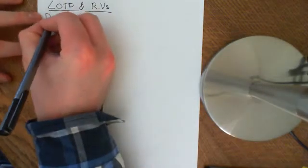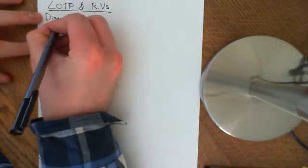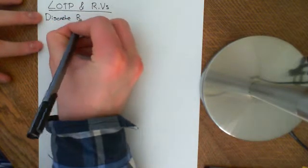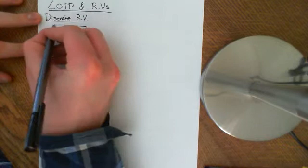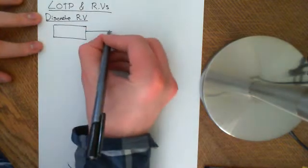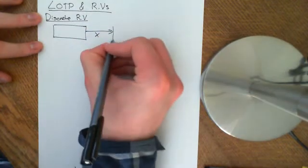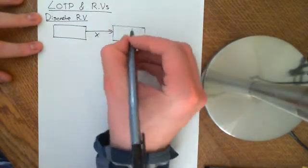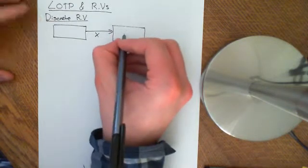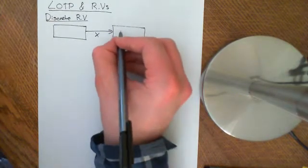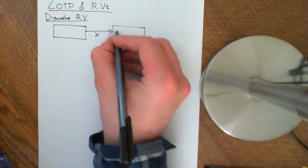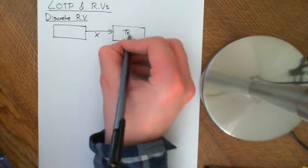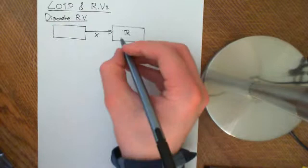For discrete random variables, the case is very easy. We have some abstract probability space being mapped onto a set of real numbers which is discrete — so you've either got finitely many, or countably infinitely many, but not uncountably infinitely many. You have a number that you can list off.